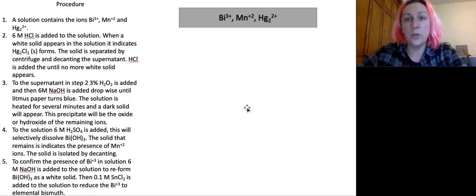So in this one, we're going to have just bismuth plus three ions, manganese plus two, and mercury plus two ions present in solution. We know we have them, and we're going to walk through a procedure that will show and identify qualitatively each of these ions. Then if I had a solution with one of these three ions, I could walk through these steps to figure out which one it was.